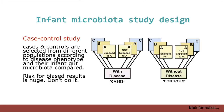In a case-control design, the opposite happens. You start with cases and controls — children that do and do not have the disease — and go back in time, perhaps using samples from a previous study, to evaluate what their gut microbiota composition was like. The big problem is that the study subjects may be from different populations or different studies, which greatly increases the likelihood of confounding factors. Huge risk for confounding. If you can avoid a case-control study, definitely avoid it.